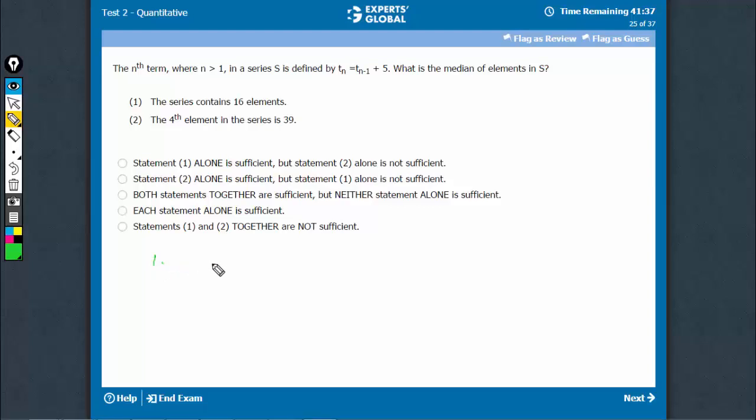Statement 1 means that the first term is a, the second term would be a plus 5, a plus 10, and likewise. If there are 16 elements, the last term would be a plus 15 times 5, which is a plus 75. These are the 16 terms.